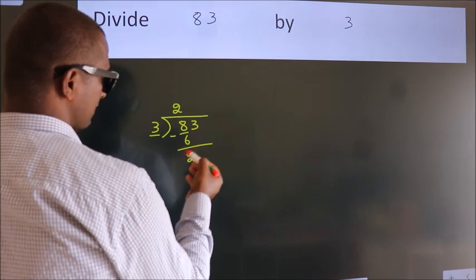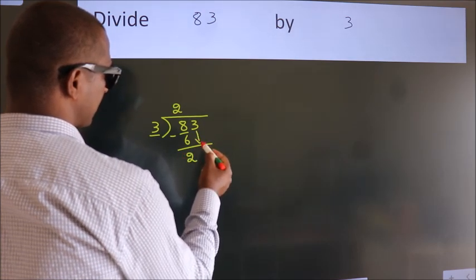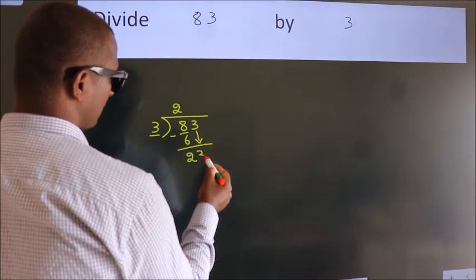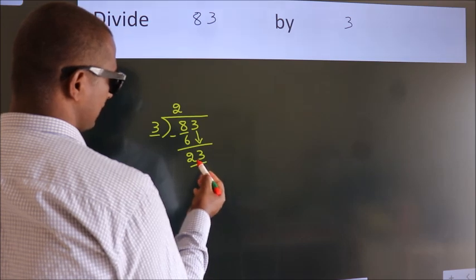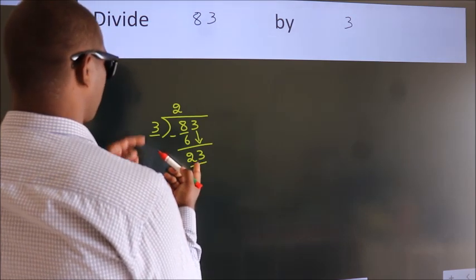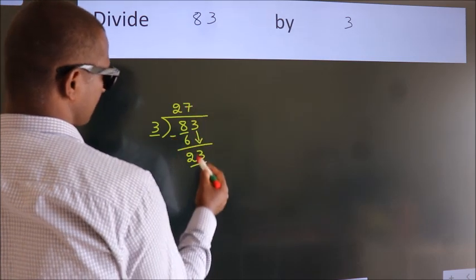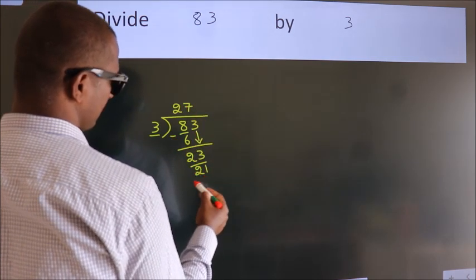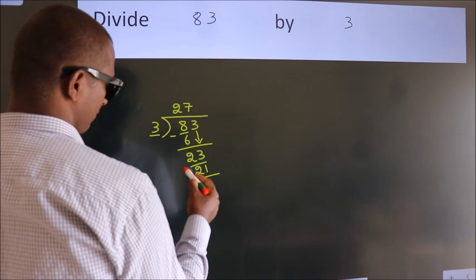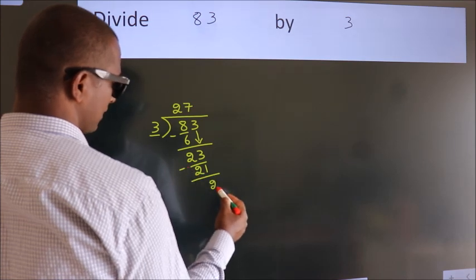After this, bring down the beside number. So 3 down, so 23. A number close to 23 in the 3 table is 3 times 7 equals 21. Now we subtract, we get 2.